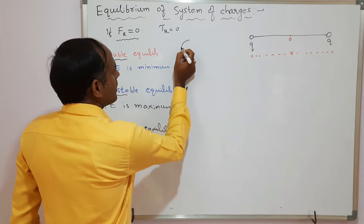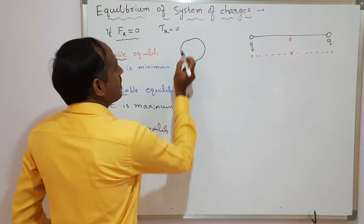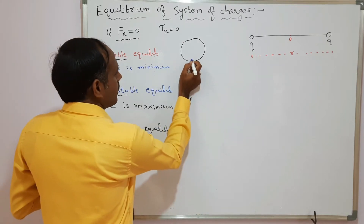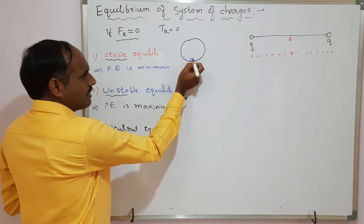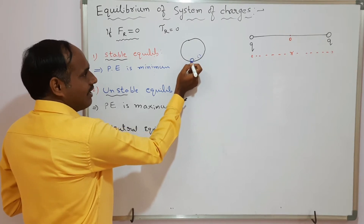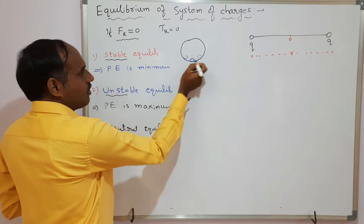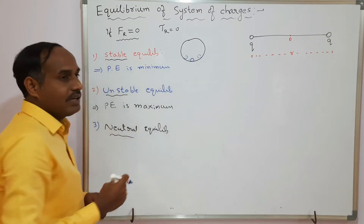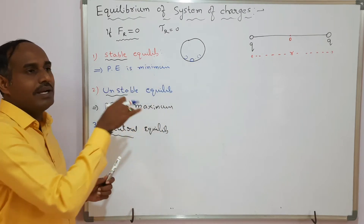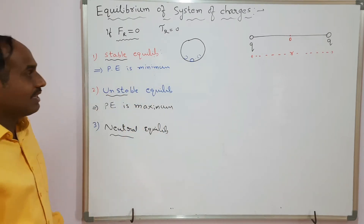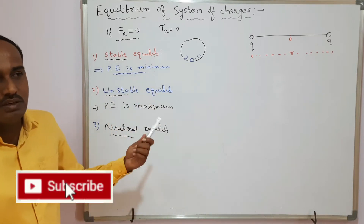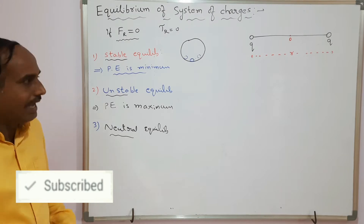To understand this, take the example of a hollow sphere. When we place a ball inside the hollow sphere and displace it, it will return to the original position. Such bodies are said to be under stable equilibrium. An important point is that the potential energy of such bodies is minimum in stable equilibrium.